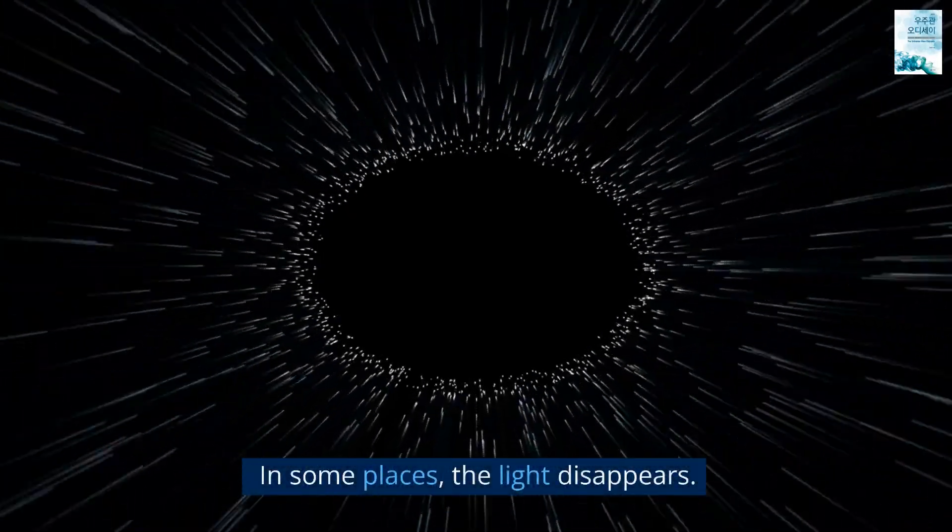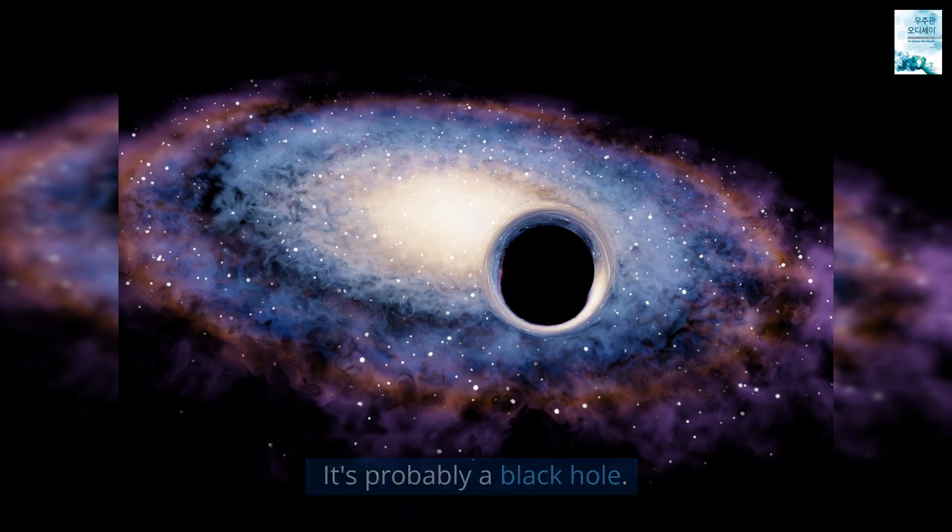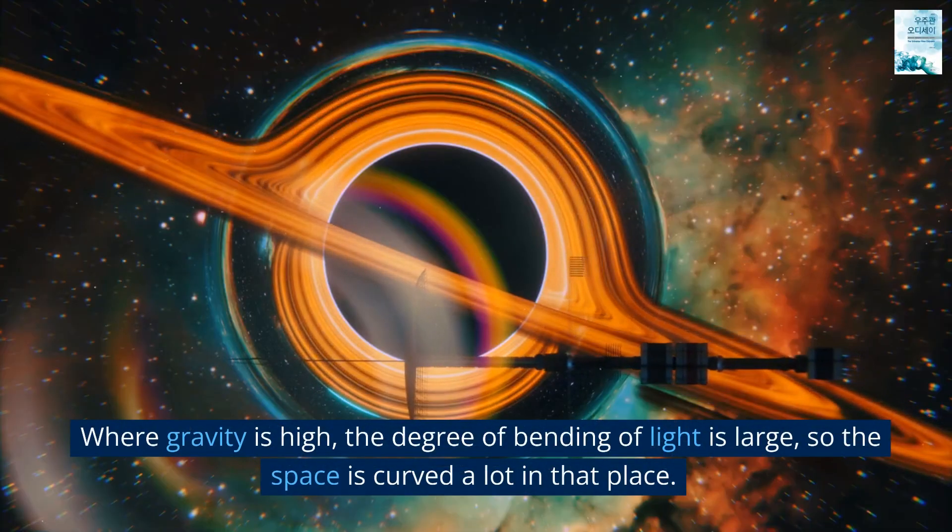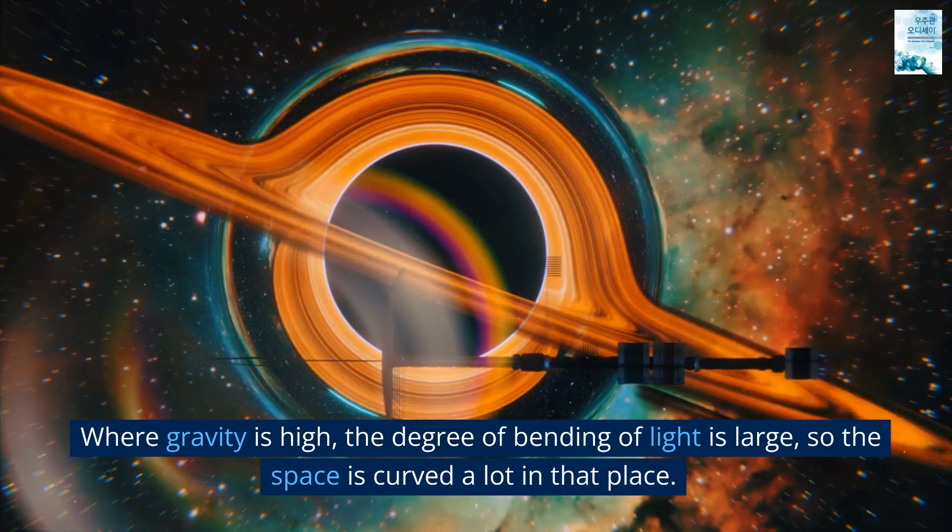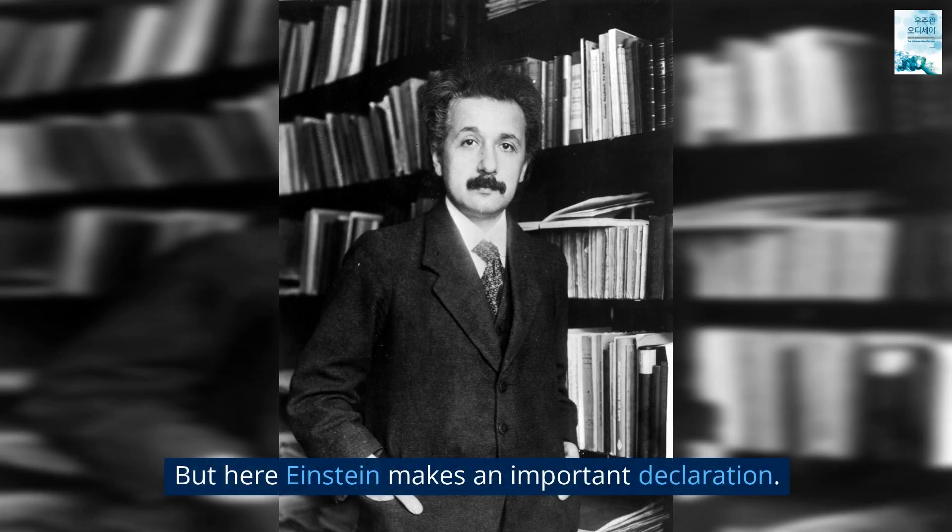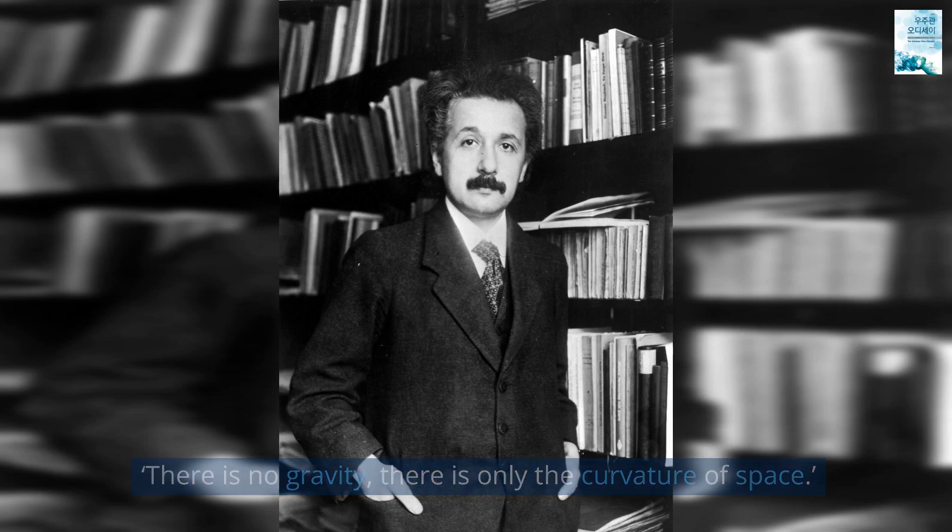In some places, the light disappears. It's probably a black hole. Where gravity is high, the degree of bending of light is large, so the space is curved a lot in that place. Is it like this? That's it. But here Einstein makes an important declaration. There is no gravity. There is only the curvature of space.